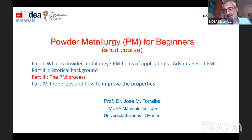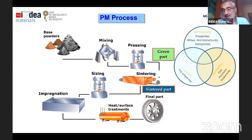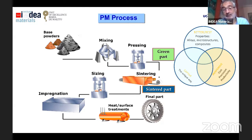How is the PM process in general terms? The first way to produce PM parts starts with base powders. Those powders should be mixed, usually with lubricants and other additives. Sometimes in the mixing process, we mix all the elemental powders that can contribute to produce the alloy. Once we have the mixed powders ready, we can press it, reaching the green part.